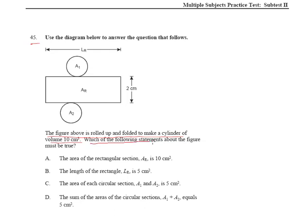Which of the following statements about the figure must be true? Is it true that the area of the rectangular section, AR, is 10 centimeters squared? In other words, this part right here, is that 10 centimeters squared? That should be a CM in here somewhere. The length of the rectangle, LR, is 5 centimeters. In other words, is this 5 centimeters right here?